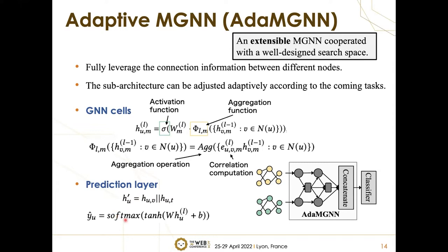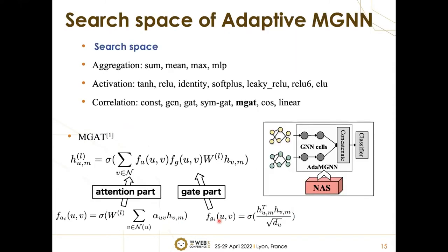We use a linear layer to predict the label of each node. This is our search space, including aggregation, activation, and correlation functions. To learn the propagation patterns of the graph from a multimodal point of view, we introduce the gated attention mechanism into information transmission. Here, fa and fj represent the gate part and the attention part of the gated attention network respectively. We use an inner product gate to represent the close relationship between node u and node v.